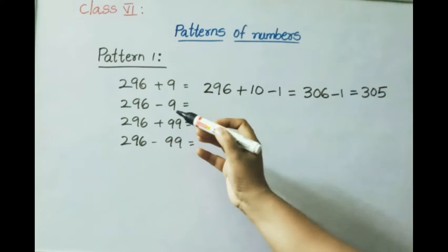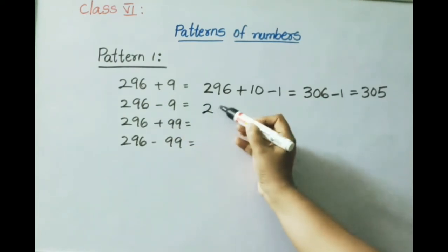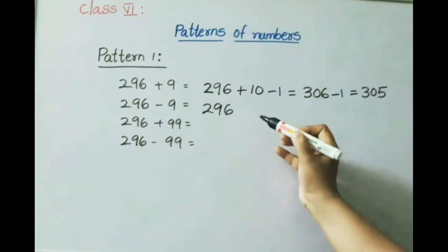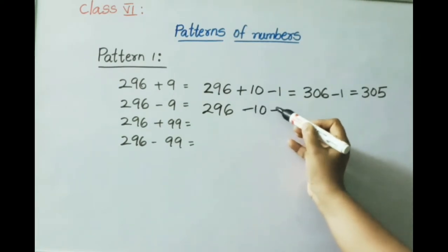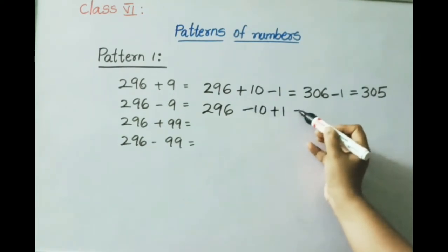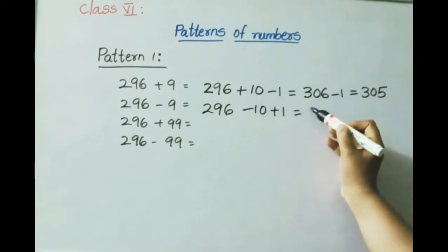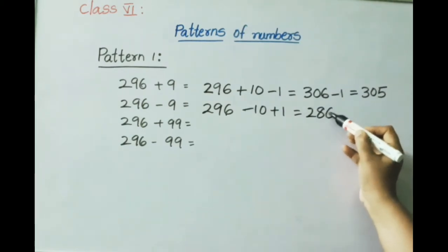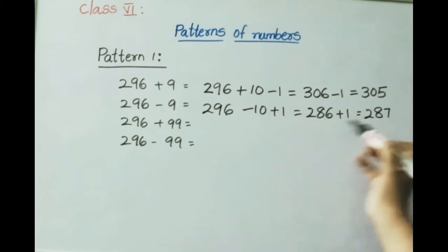Next: 296 minus 9. We write minus 9 as minus 10 plus 1. So 296 minus 10 equals 286, plus 1 gives 287. The answer is 287.